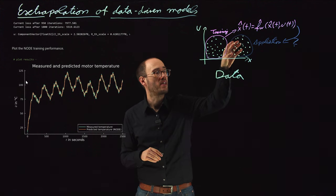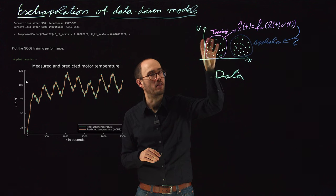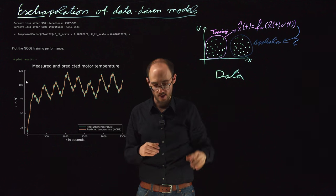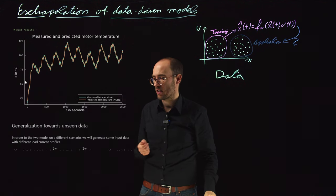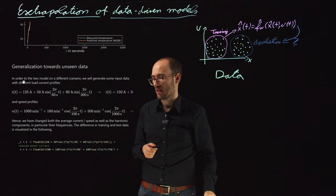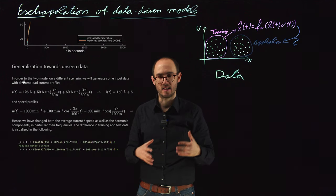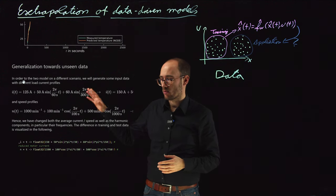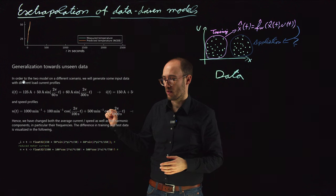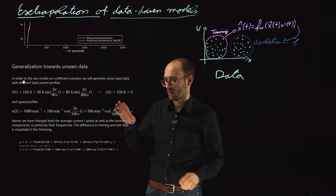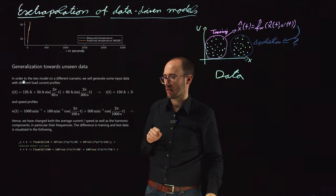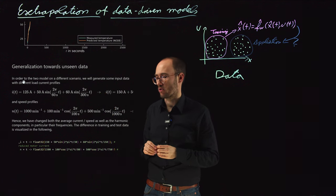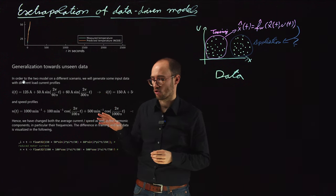But now we want to look what is happening if we take the model and throw it against new application scenarios. So that would be a generalization towards unseen data, but in terms of dynamics, specifically unseen input state combinations. And how do we do that? We basically change the current and speed profile. So what we do is we add a little bit more of load current here, which is not completely seeable here in this live demo, but you can see it in the notebook which is on GitHub, of course.